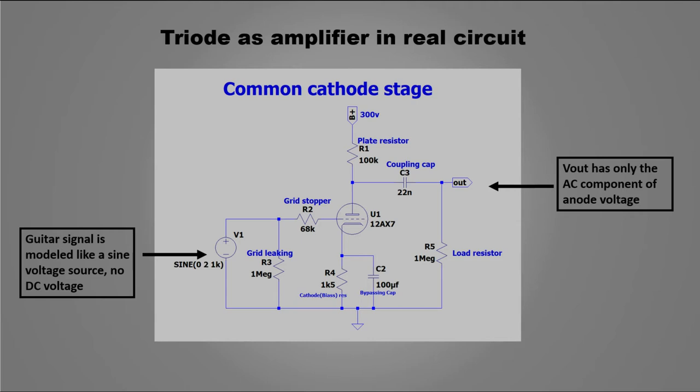Resistor R3 is the grid locking, and its value determines the input impedance of the circuit, usually is 1 meg.